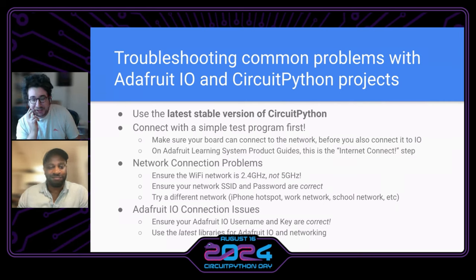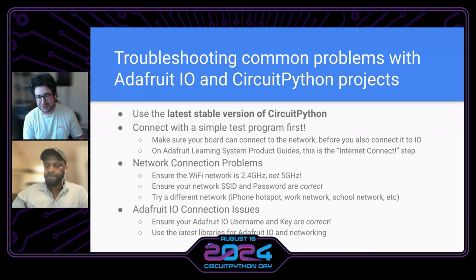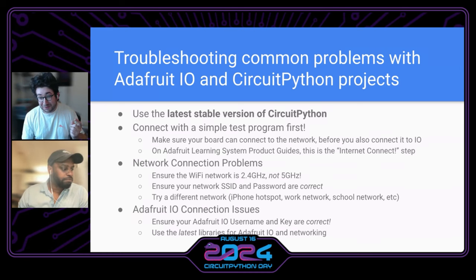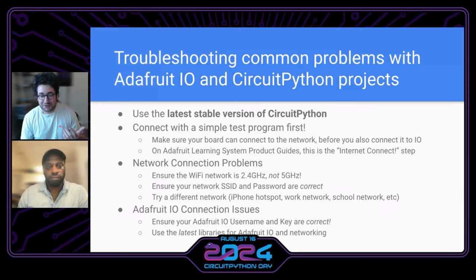The next thing is network connectivity issues. You need to ensure the network is 2.4 gigahertz, not 5 gigahertz. There are a lot of new routers — like my Fios router ships with a 5 gigahertz mode. You can turn that off. You can also use two separate networks — we have a guest network that uses 2.4 gigahertz and then the main home network is 5. So that's a way to split the two.